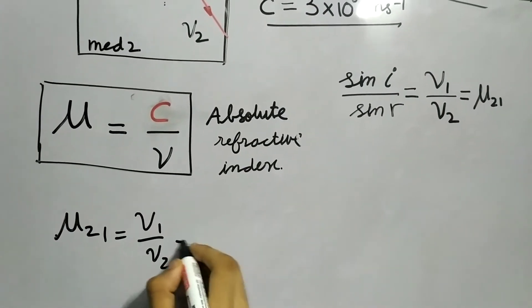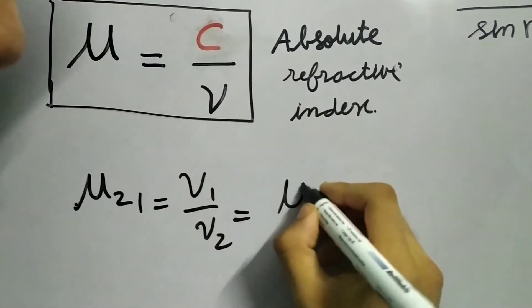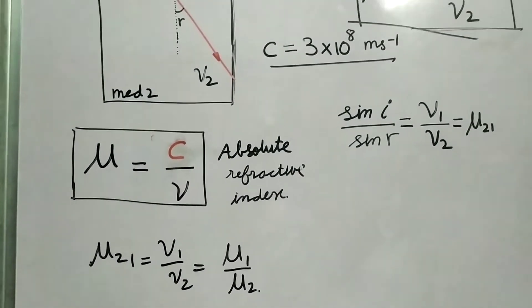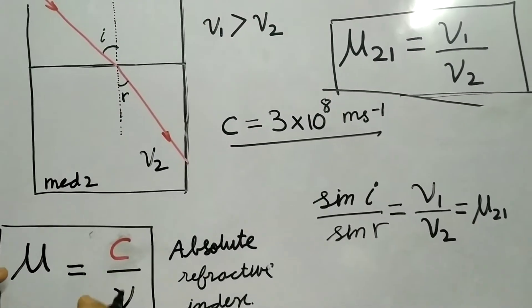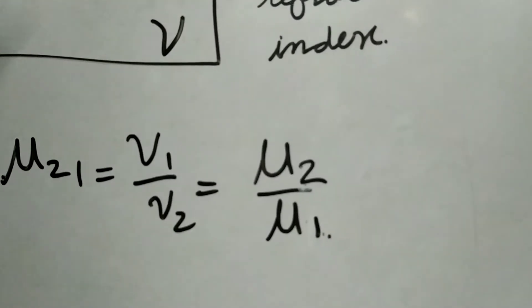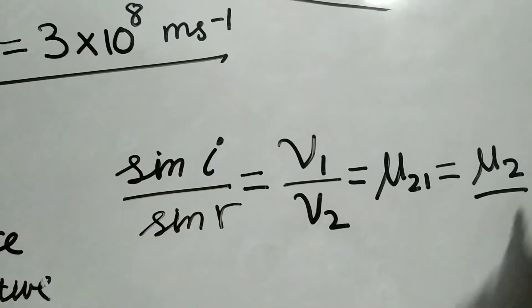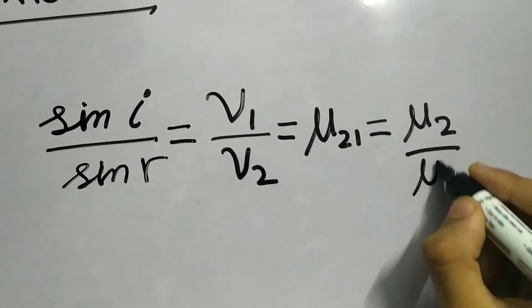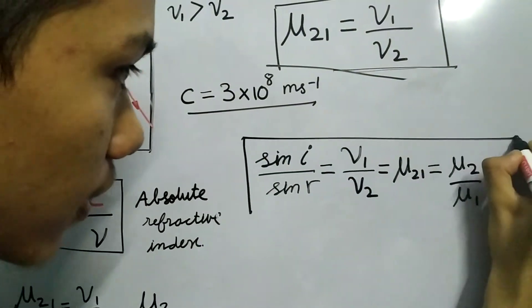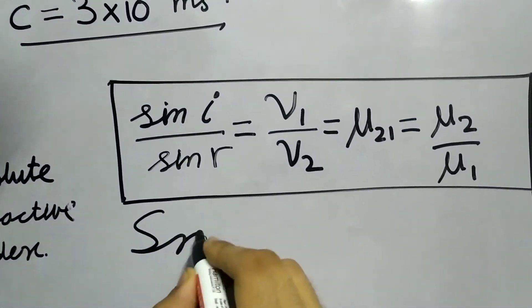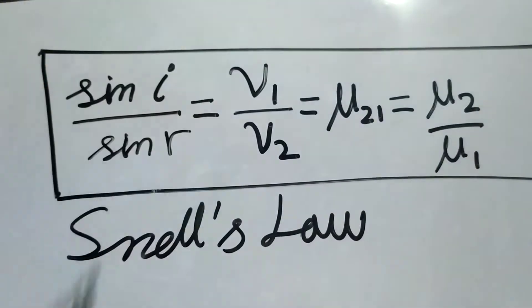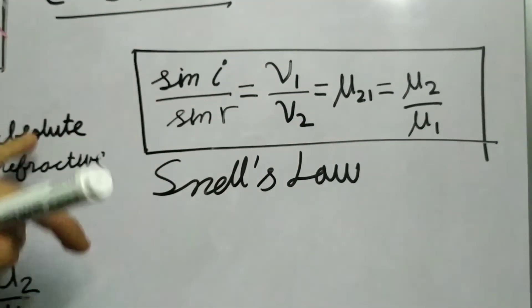There is a proof to this, but we are not discussing that proof here because it involves something in mathematics known as differential calculus. We divide these two, sin i by sin r, and we get the ratio of these velocities. What can we write? From this relation, μ2 with respect to 1. This will be μ2 by μ1. That entire stuff is known as Snell's Law.